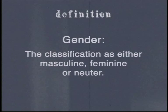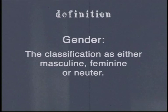Let's break the term down. In lesson one, we learnt about nouns, so you should be clear about that. But what about the term gender? Do you understand what it means? Here is a definition: gender is the classification as either masculine, feminine or neuter.